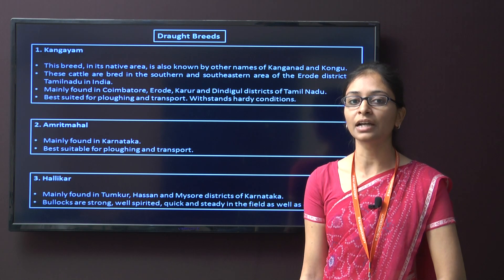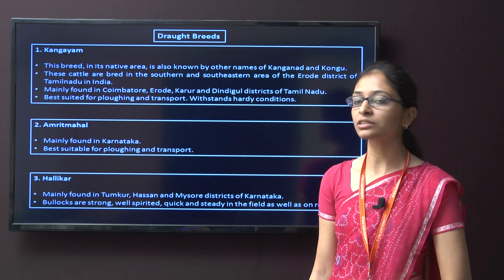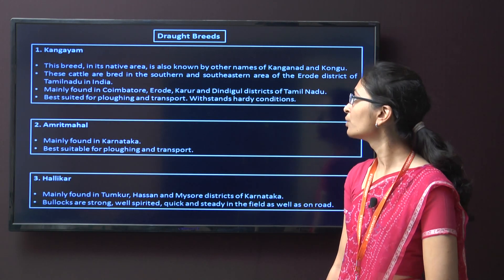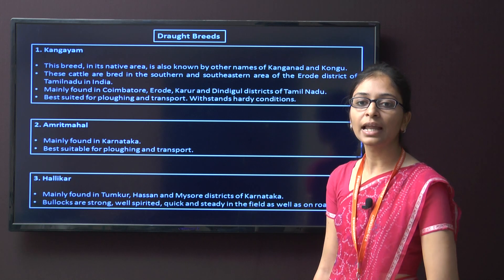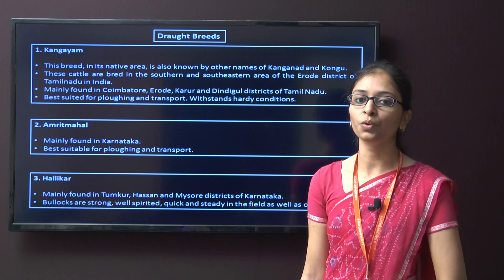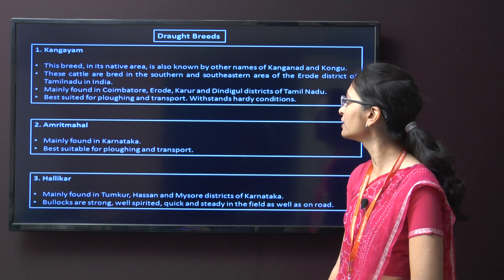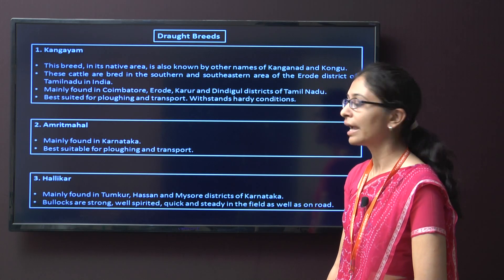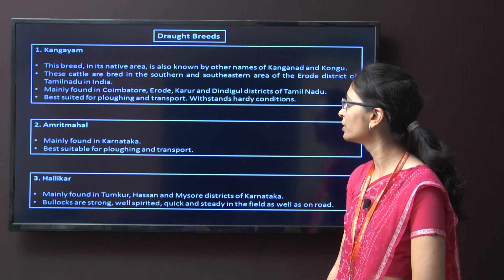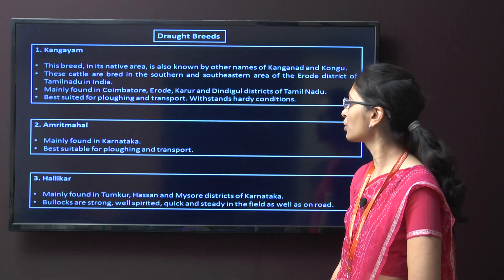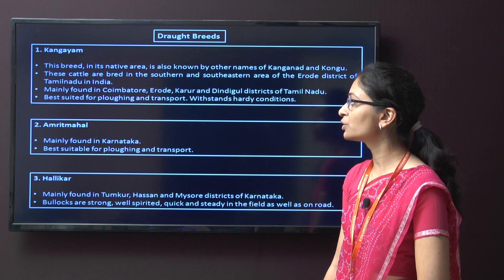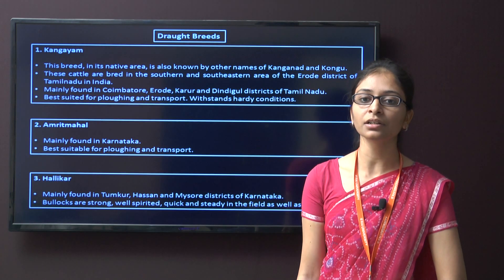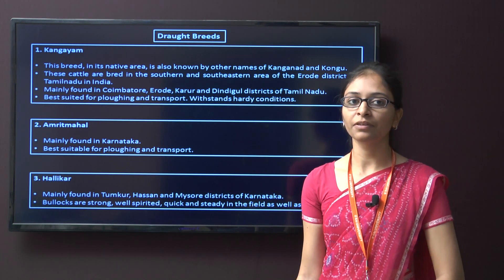The last type is the draft breed. The first breed is Kangyanam, also known as Kongu in its native area. This cattle breed is bred in the southern and southeastern areas of Erode district of Tamil Nadu, and is mainly found in Coimbatore, Erode, Karur, and Dindigul districts. It is best suited for ploughing and transport, and can withstand hardy conditions.